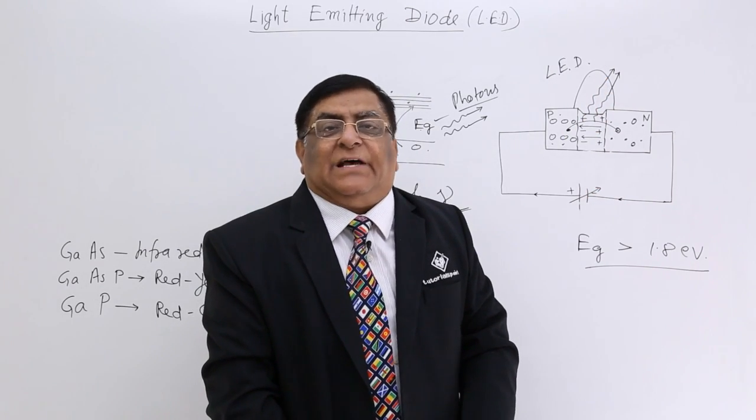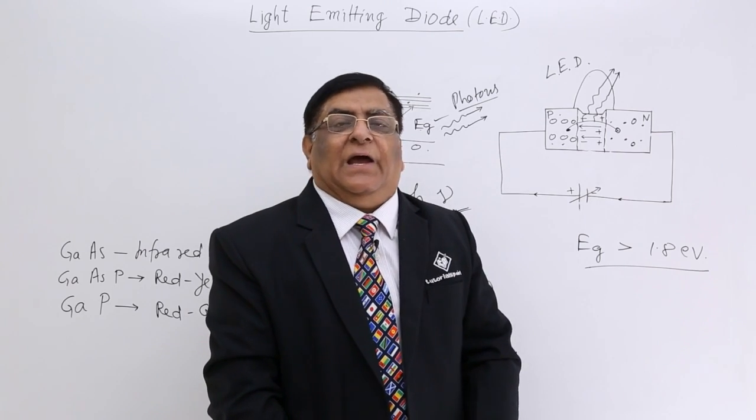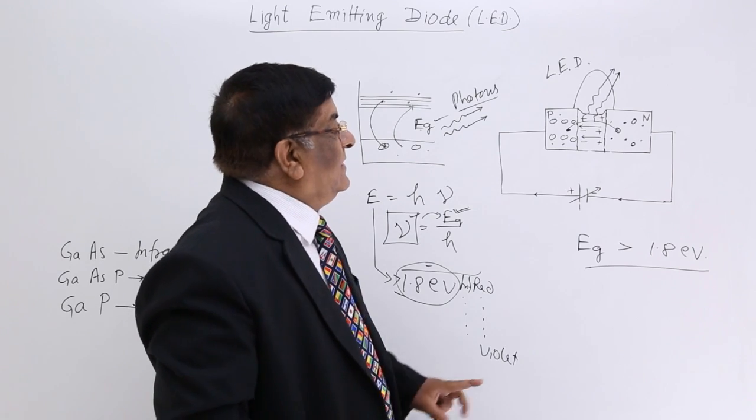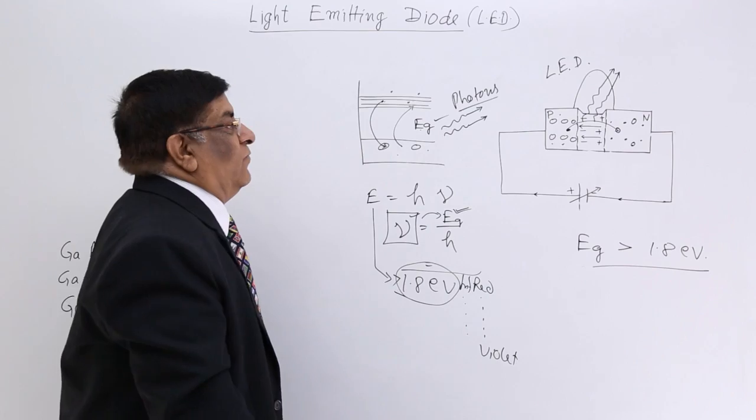And these are the photons which we see, which gives us the light. And you have seen the energy equation of this. And energy level should be more than 1.8 electron volt.